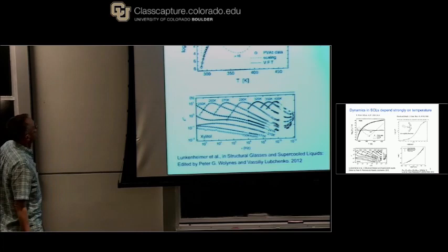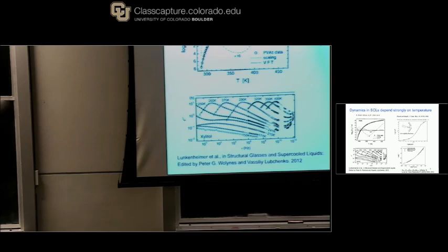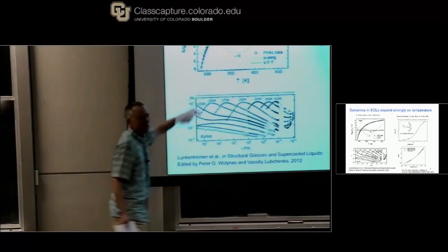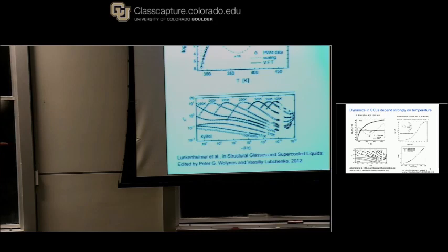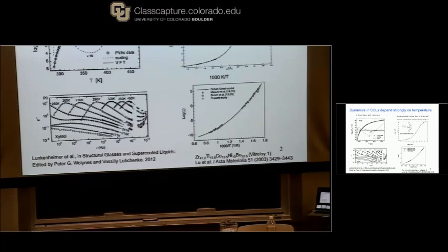This is also dielectric relaxation — another one of my favorite examples, from Ranko Richert. The highest temperature corresponds to 10^-8 seconds. The lowest temperature is 10^+8 seconds — which is a year. So they actually did an experiment for a year; they got a material to equilibrium and did an experiment over a year to get that very last point on the graph. So here we have a factor of 1.5 in temperature and 16 orders of magnitude in relaxation time.